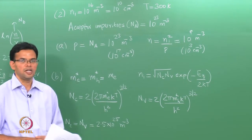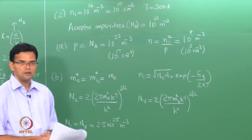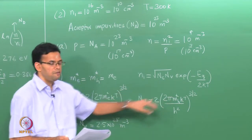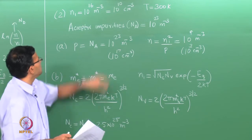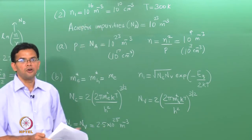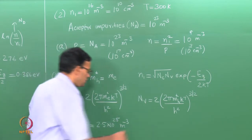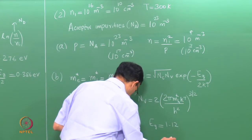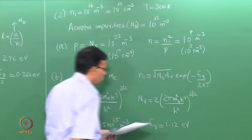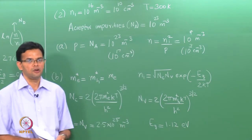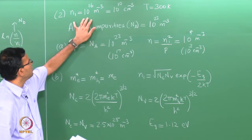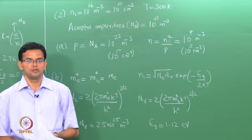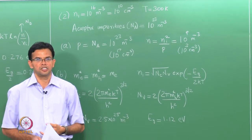Now we know the values of N_c and N_v. N_i is given as 10^16. Using N_i = √(N_c · N_v) · exp(−E_g / 2kT), we can calculate E_g = 1.12 eV. The material we are talking about here is silicon — N_i is 10^10 per centimeter cube, which is the room temperature intrinsic carrier concentration of silicon.